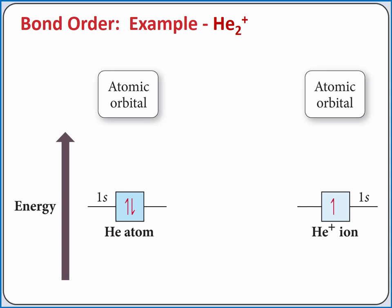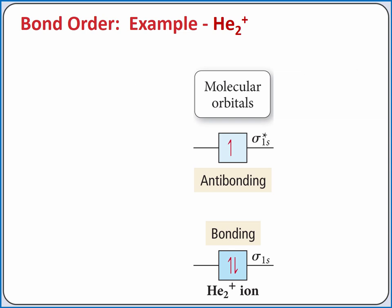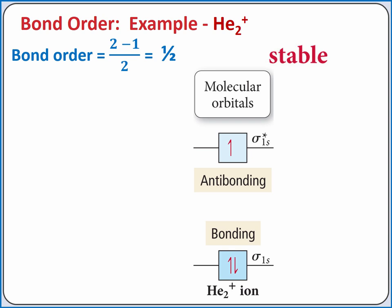We start with the atomic orbitals for our two helium atoms. Since there is an overall charge of 1+, we remove one of the electrons from the helium atom on the right. By combining the two atomic orbitals, we create a bonding molecular orbital lower in energy and an antibonding molecular orbital higher in energy. To calculate the bond order: 2 electrons in bonding orbitals minus 1 electron in antibonding orbitals, divided by 2, gives a bond order of ½. Since we have a positive bond order, He₂⁺ should be stable enough to exist — and under particular conditions, we do have evidence that He₂⁺ can exist.